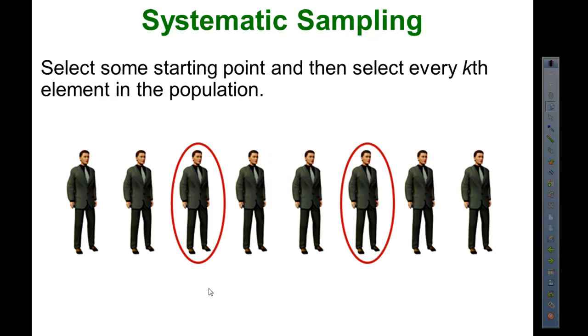Systematic sampling. In systematic sampling, we select some starting point. We might use random number to generate the starting point, and then we select every kth element in the population. We select some starting point, could be in a list of numbers, it could be a physical location, and then we select every kth element or sample at every kth interval to get our sample.